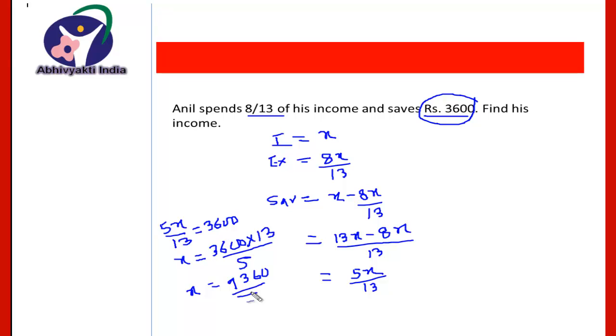But when I observed this step, I found that 3600 is a saving, 13 is the denominator, and 5 is the difference between the numerator and the denominator. Can we solve all these types of questions using this trick?